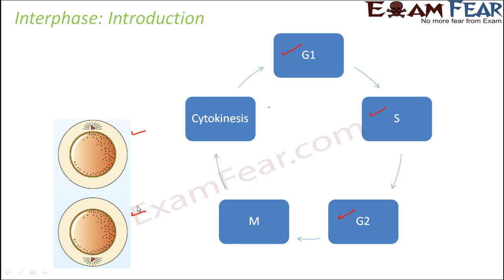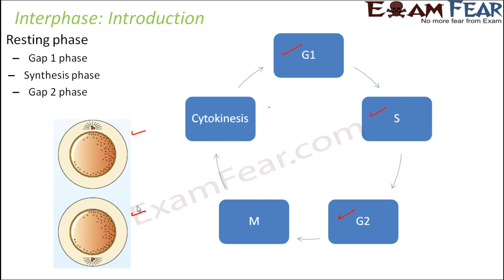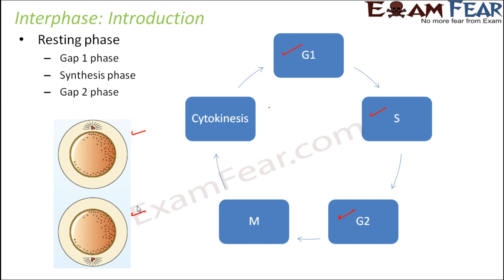You have separate, individual cells which get matured and prepare themselves for cell division. This phase is also known as the resting phase — resting in the sense that the cell is not dividing. It is taking rest so that when the dividing stage comes, it can be active to divide. It is divided into three phases.